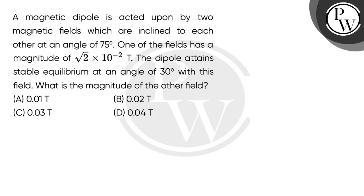Hello, let's read the question. A magnetic dipole is acted upon by two magnetic fields which are inclined to each other at an angle of 75 degrees.